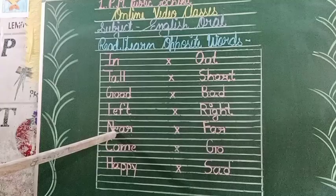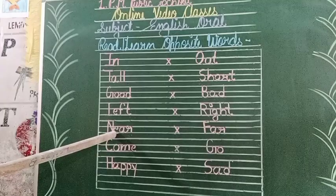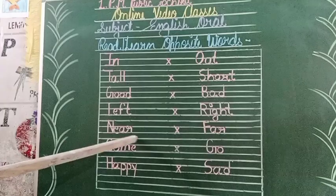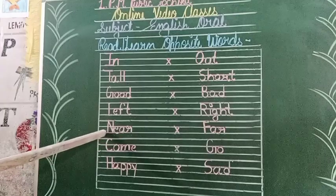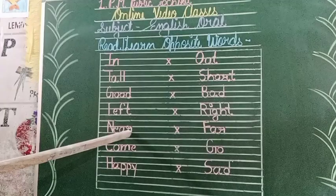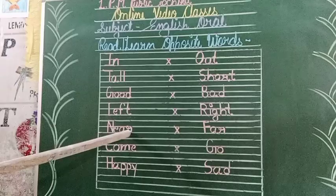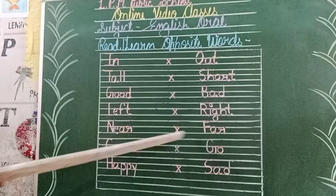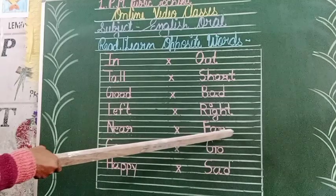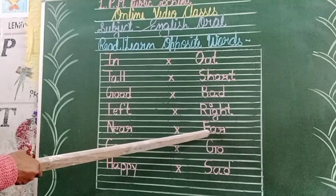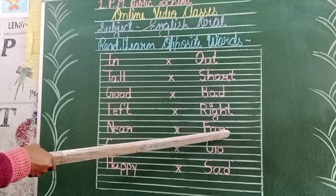Spelling of 'near': N-E-A-R, near. N-E-A-R, near. Spelling of 'far': F-A-R, far. F-A-R, far.